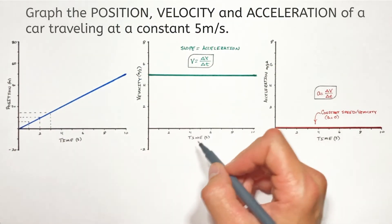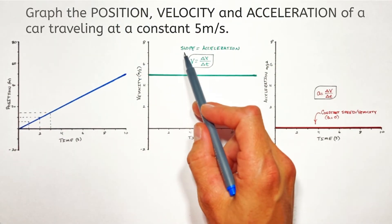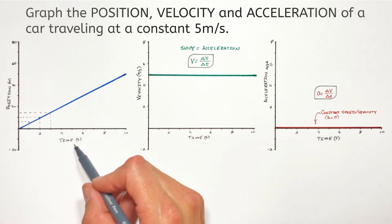And just like on our velocity versus time graph, where we saw the slope was equal to acceleration, on our position versus time graph, we see the slope is equal to velocity.